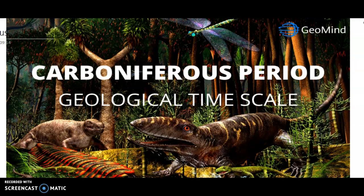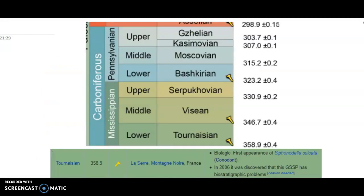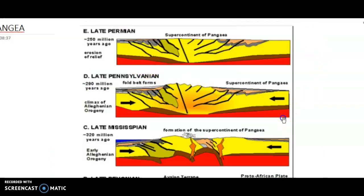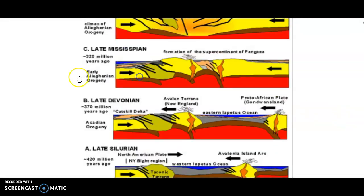Hello guys, how are you? Welcome to Geombind. This is Part 2 of the Carboniferous period in the video series Geological Timescale. In the previous video we talked about the paleogeography, paleoclimate, introduction to the timescale of the Carboniferous period, the formation of Pangaea, and the Appalachian and Allegheny Orogeny.